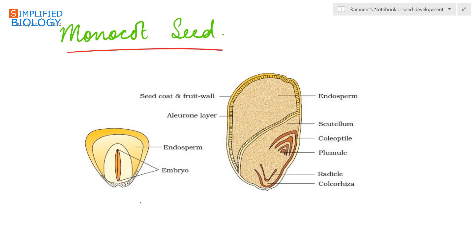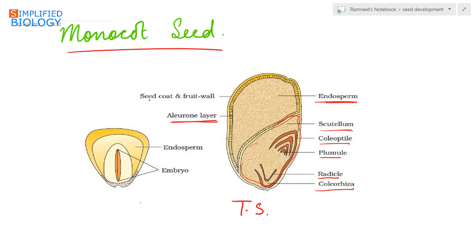In the transverse section of a monocot seed, the major part of the seed is occupied by the endosperm, while the embryo lies obliquely. The embryo has the single cotyledon scutellum, plumule, and radicle with their protective coverings — coleoptile and coleorhiza. The outermost layer of the endosperm is the aleurone layer, which has hydrolytic enzymes. Surrounding it is the seed coat and the fruit wall.